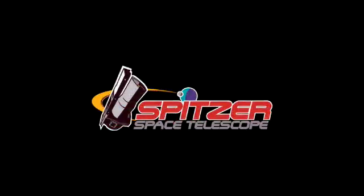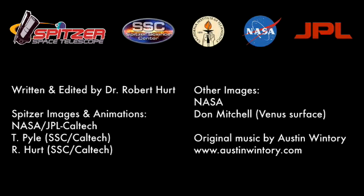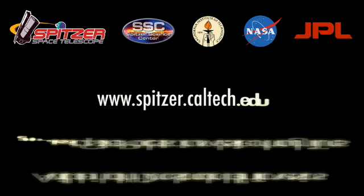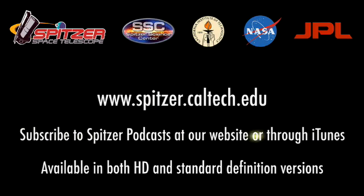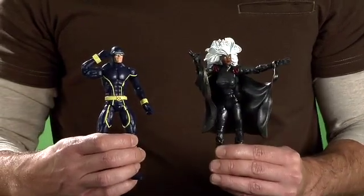The Hidden Universe is produced by the Spitzer Science Center at the California Institute of Technology in Pasadena. The Spitzer mission is managed by NASA's Jet Propulsion Laboratory. Cyclops and Storm, the hottest and windiest known planets.